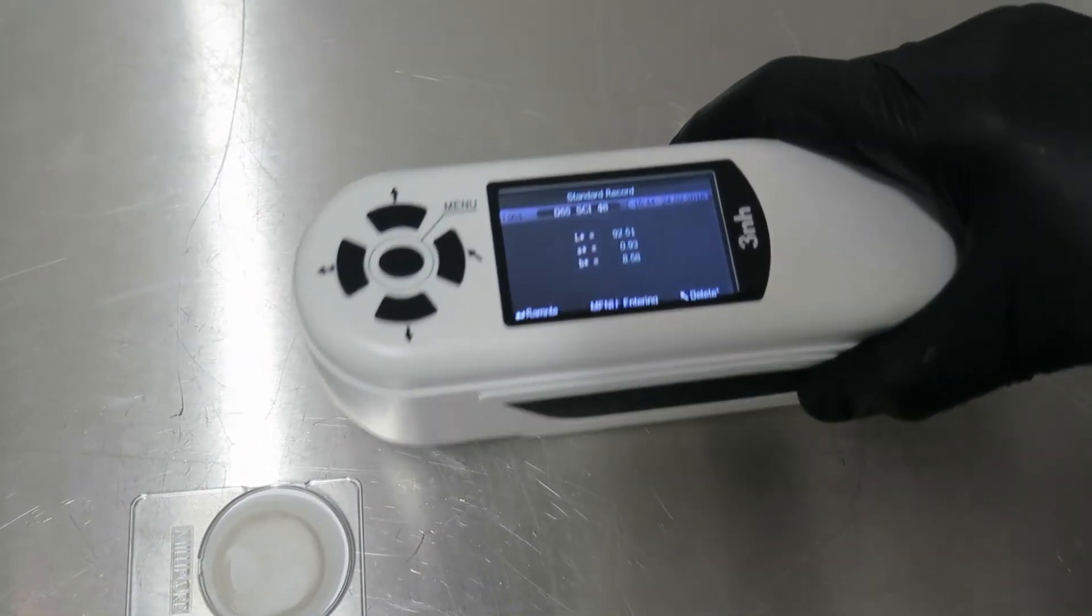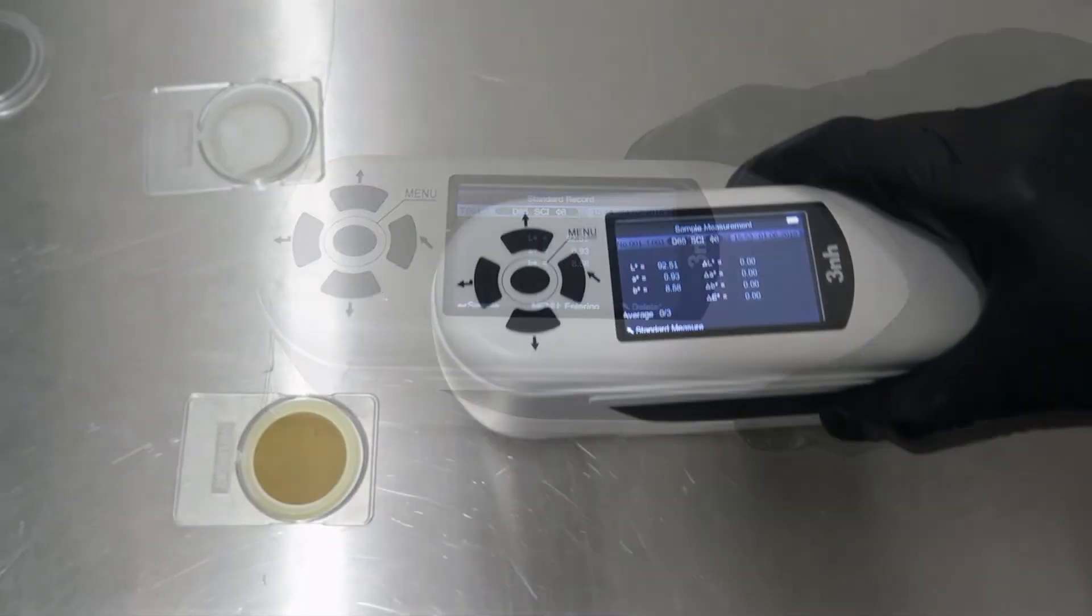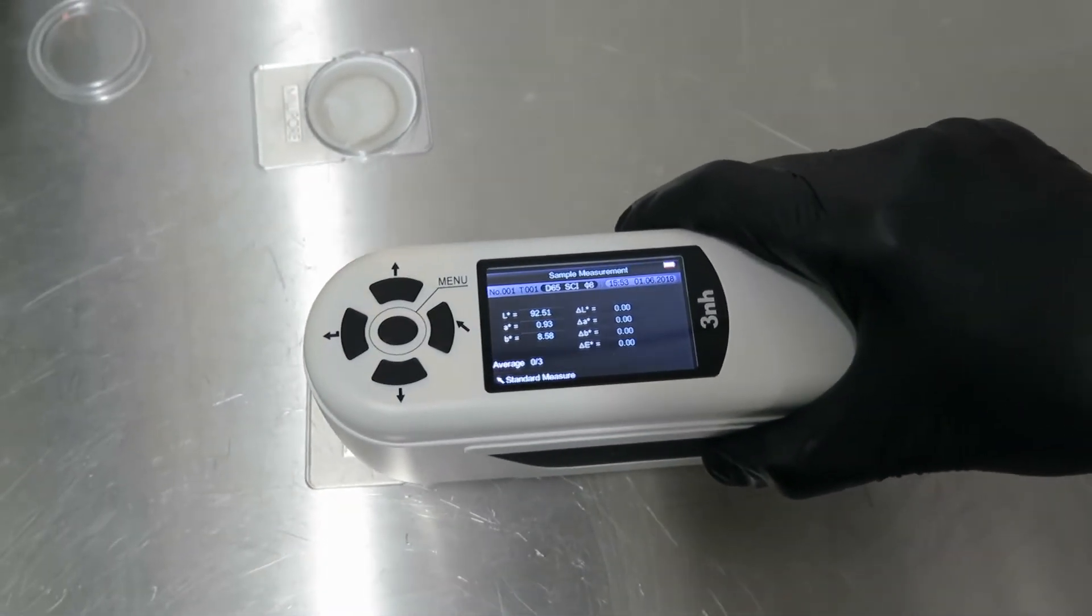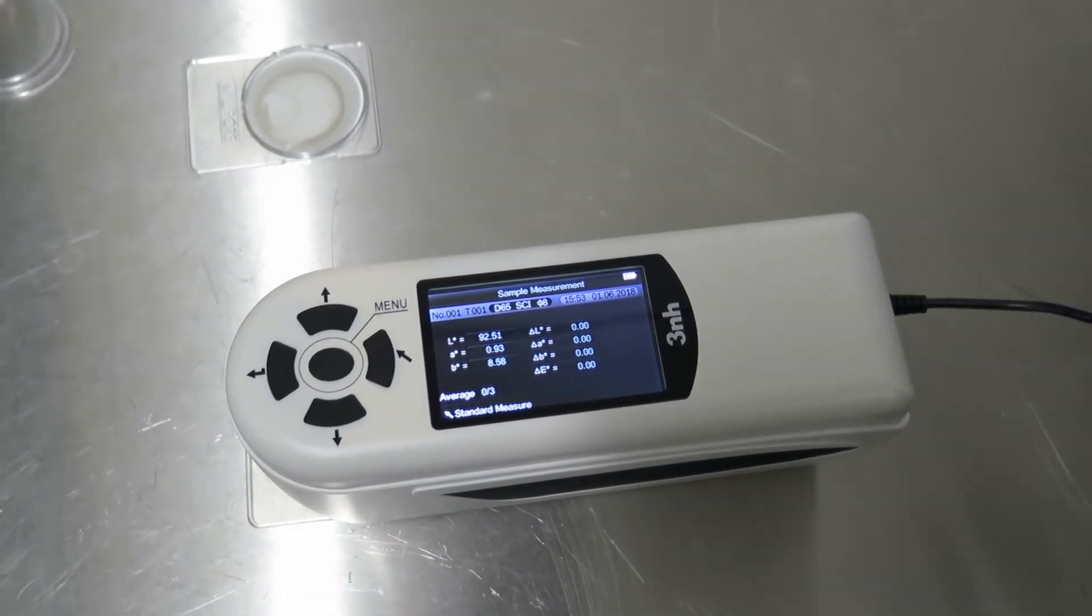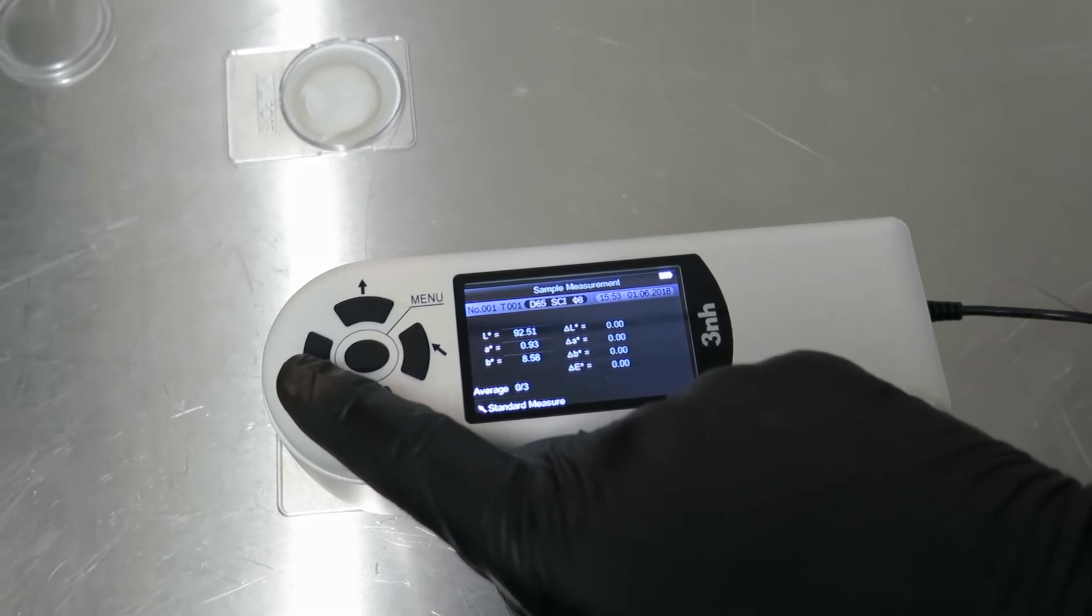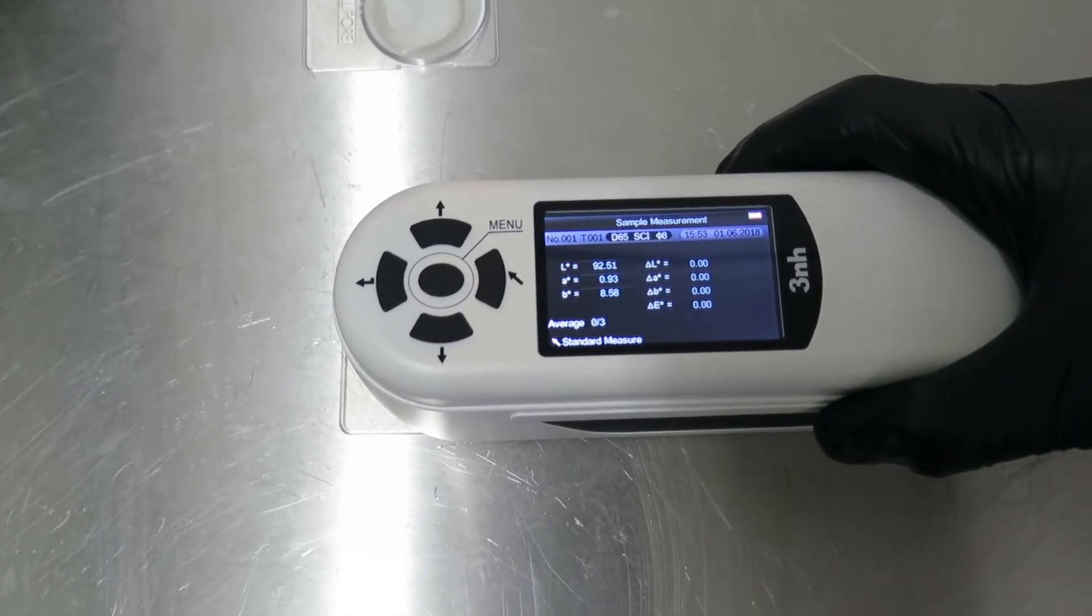Then measure the color of the used oil and reference it against the color of the baseline or standard new oil. This is done by selecting the appropriate parameters within the instrument.